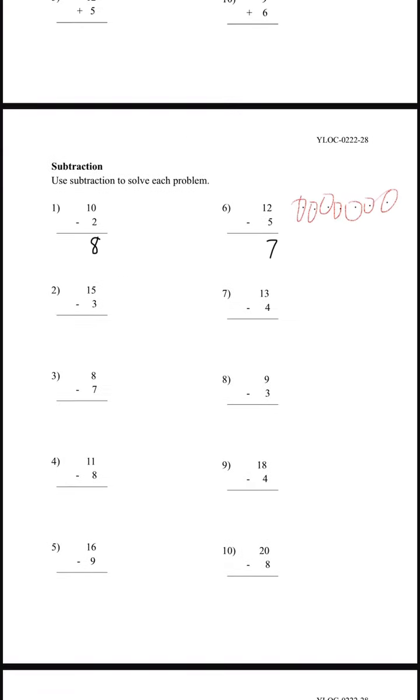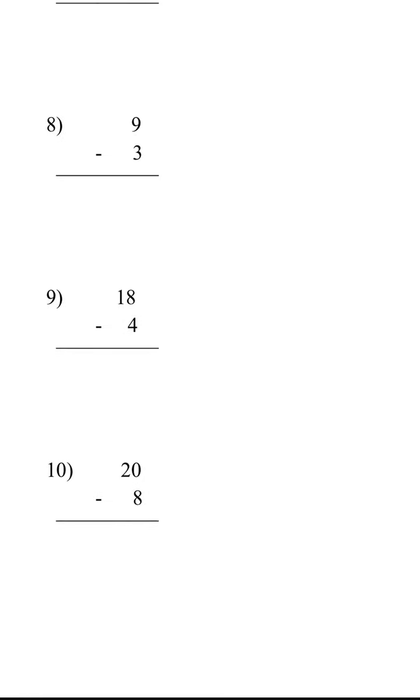Now we're going to try 2 more. Number 9 and number 10. 18 minus 4. Here's 8 minus 4. We use the 1's place. We figure out the 1's place first. So 8 minus 4 is 4. And the 1 comes down. So we have 14.